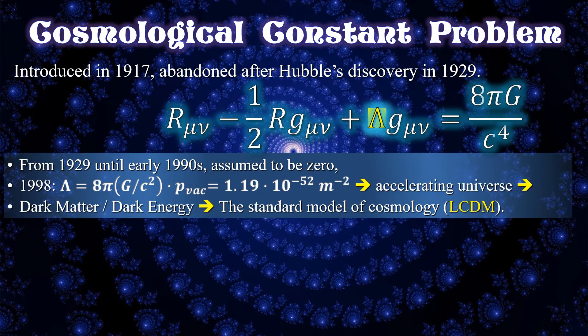Einstein added the cosmological constant to his field equations so that the positive attraction of matter may balance the cosmological constant repulsion. However, after Hubble's discovery of the expansion of the universe in 1929, he abandoned this idea and called it his biggest blunder.